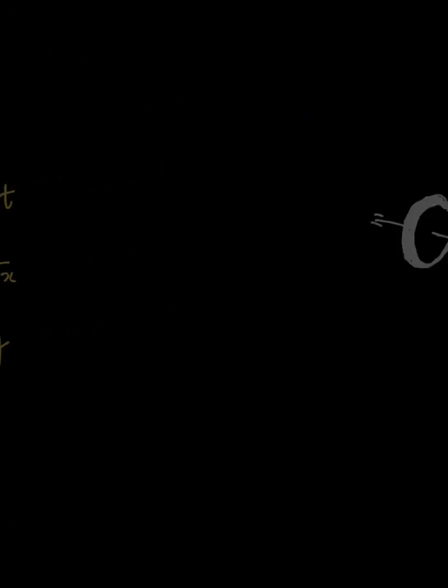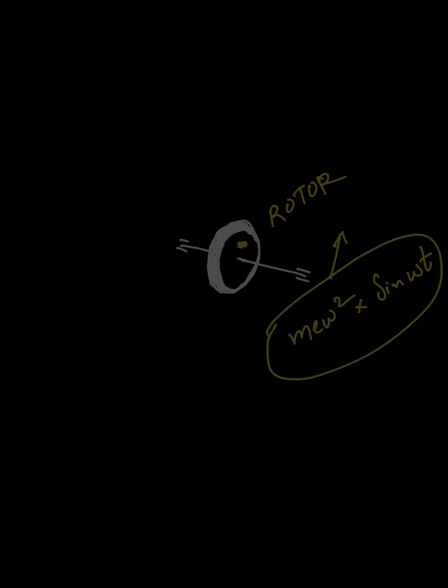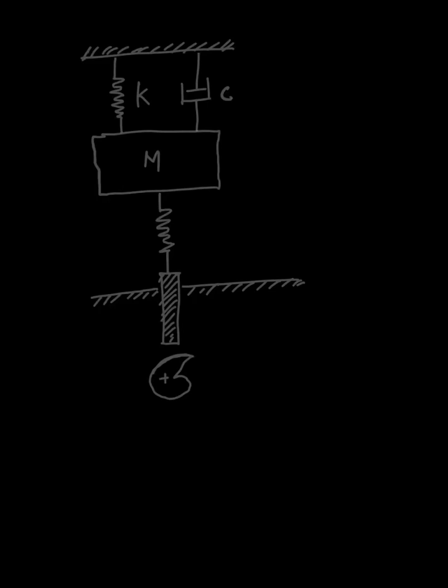Another example: rotary systems, which we see frequently in engineering applications like turbines. If there is an eccentricity somewhere in the rotor or shaft, then similarly there will be an m·e·ω² term, and if I write the equation in the direction perpendicular to the shaft, there will be a sine or cosine term associated with it. This is another good example where harmonic excitation comes into picture.